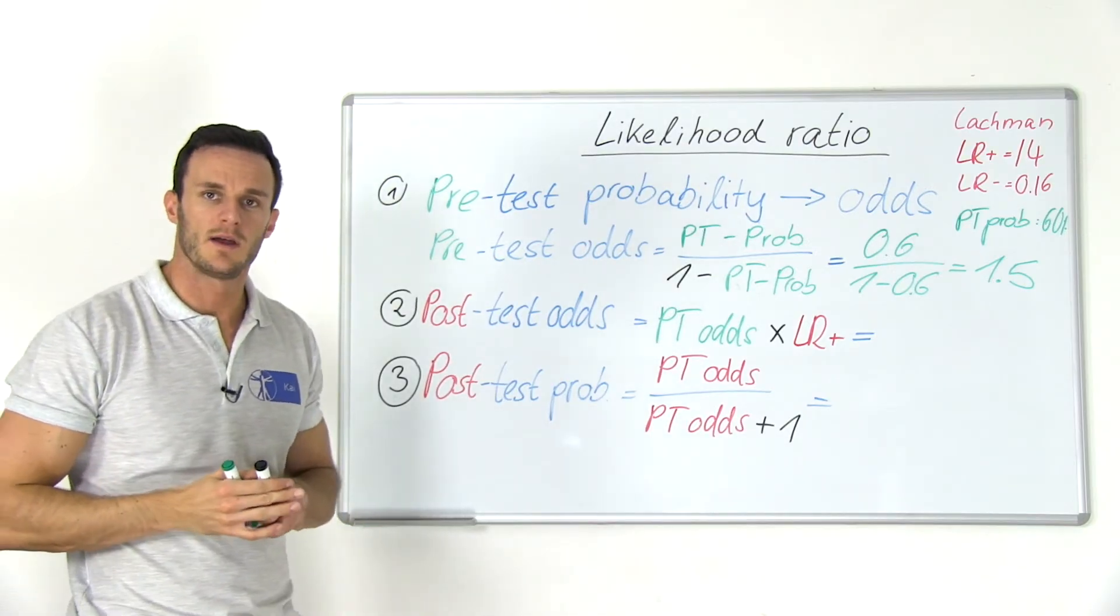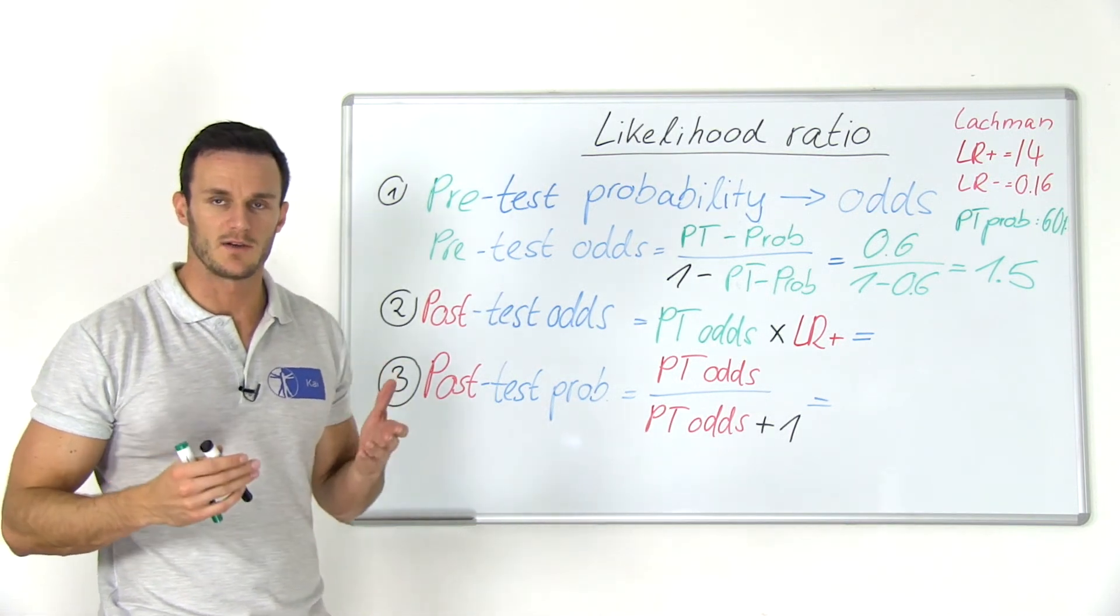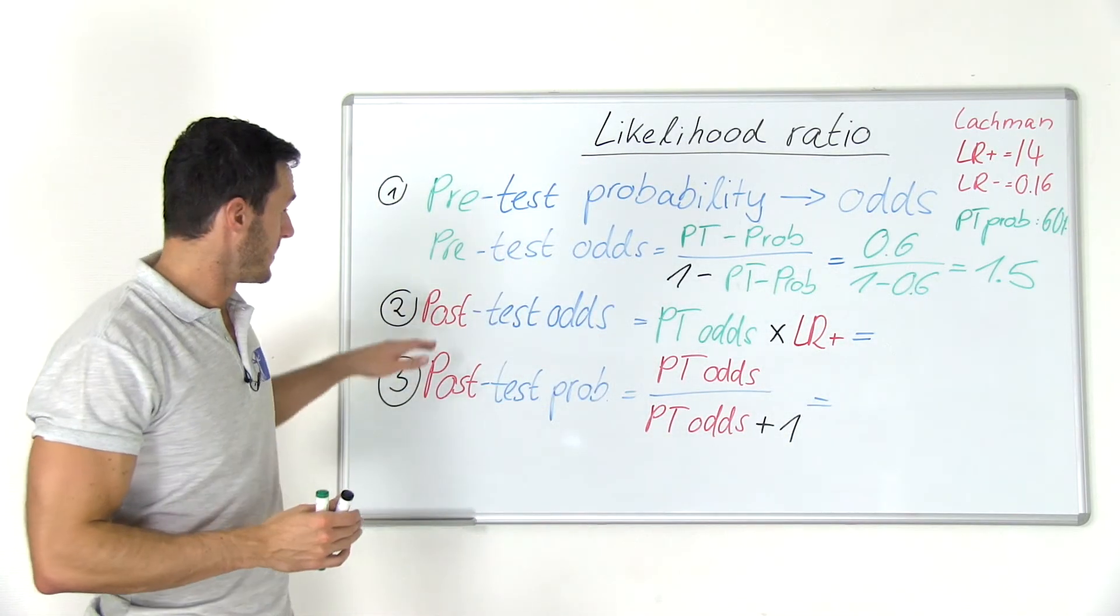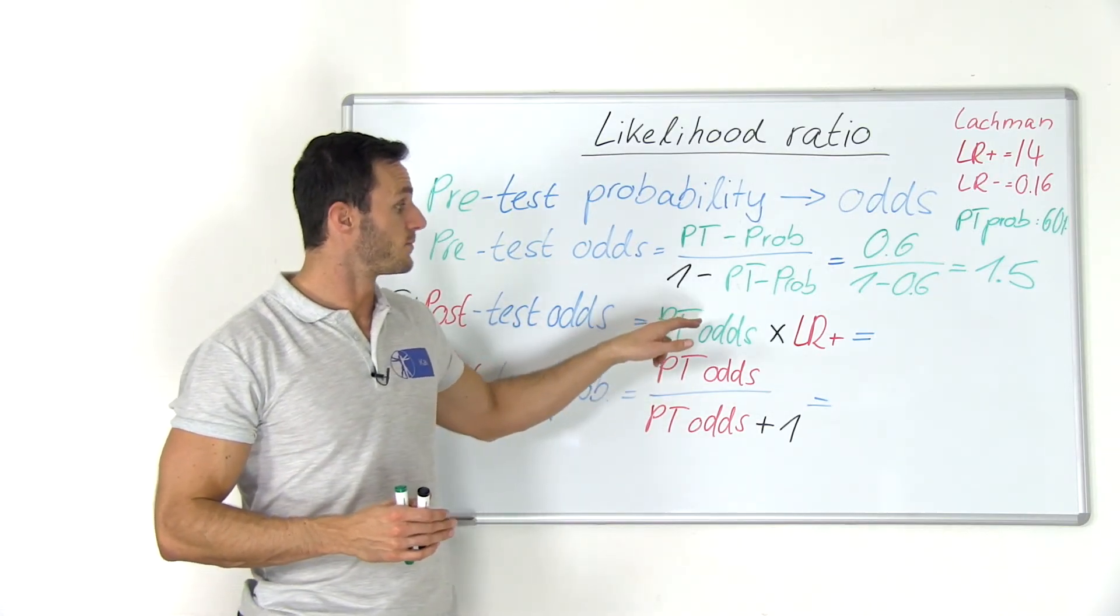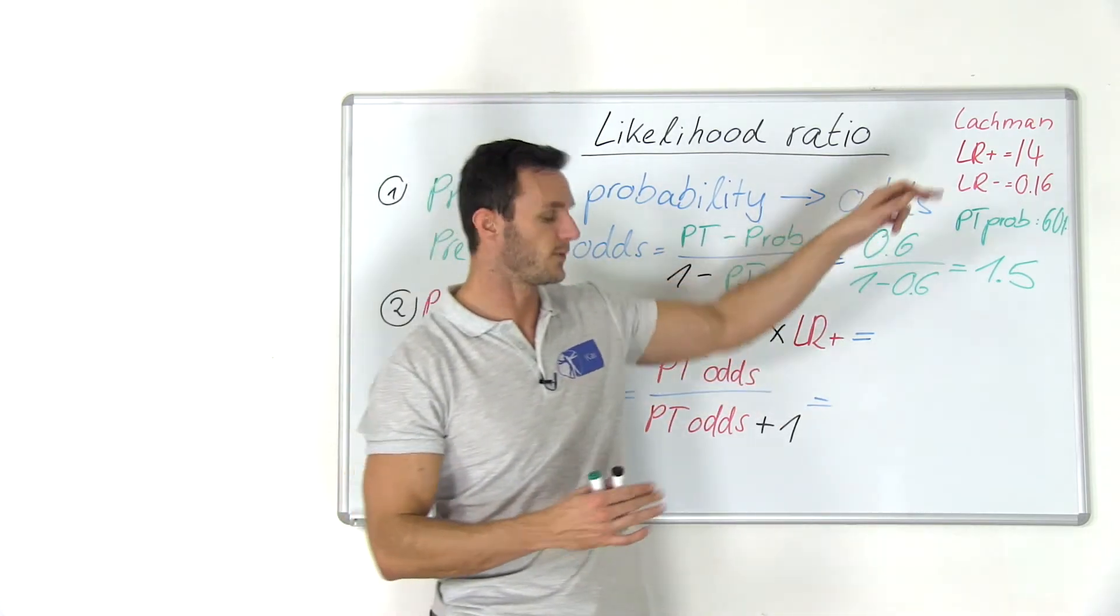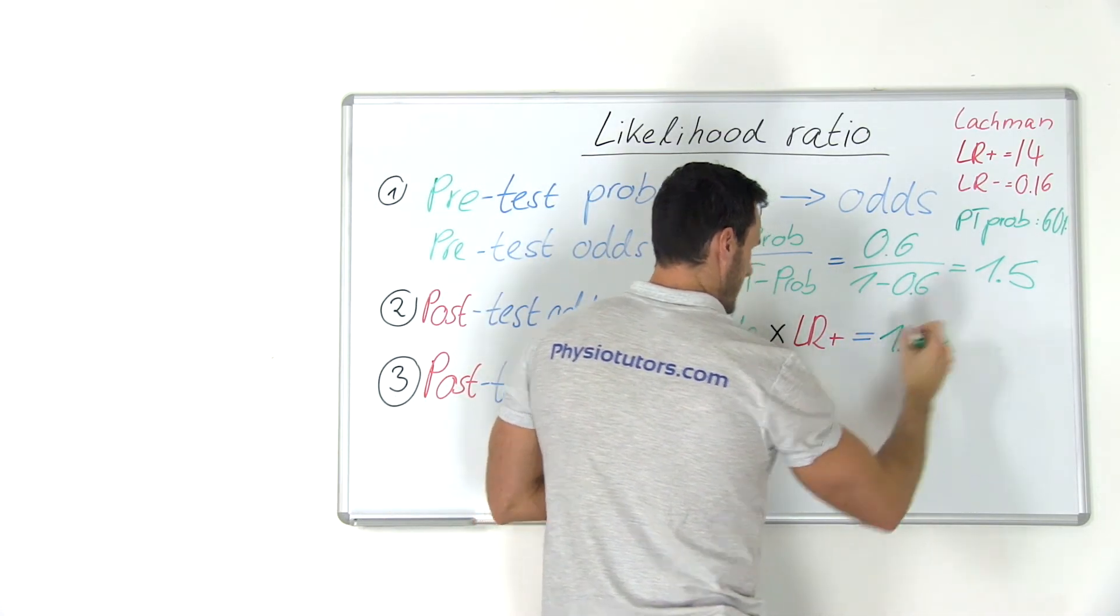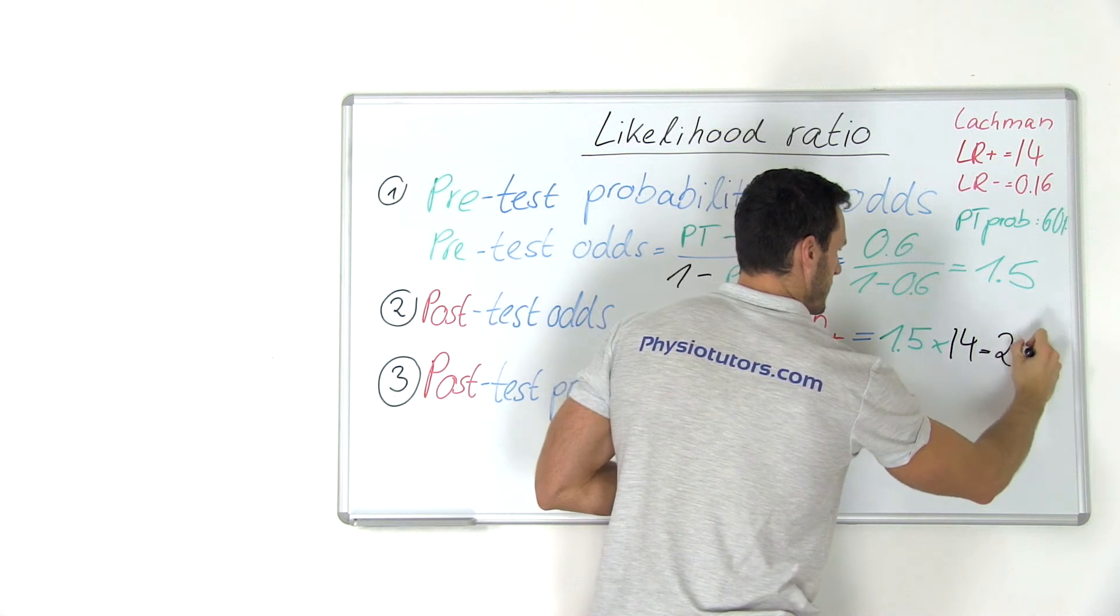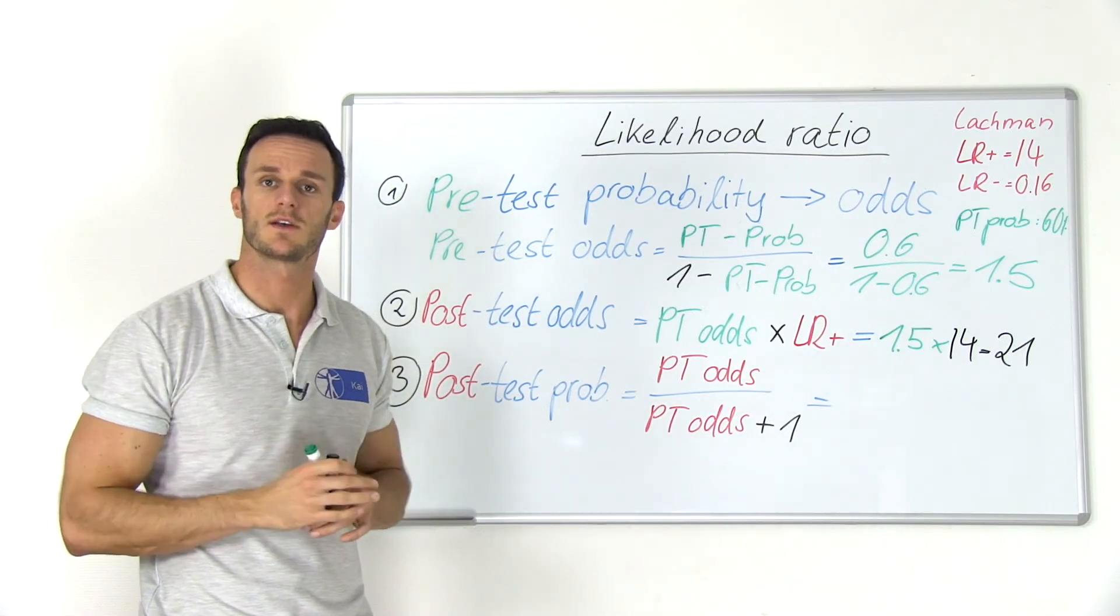Okay, then the second step is to calculate the post-test odds based on my positive likelihood ratio and based on the pre-test odds that I just calculated. So in this case, for a positive test, I would multiply the pre-test odds, so 1.5, with the positive likelihood ratio for the Lachmann test, which is 14. So we will have 1.5 multiplied by 14, and we end up with a post-test odds of 21.